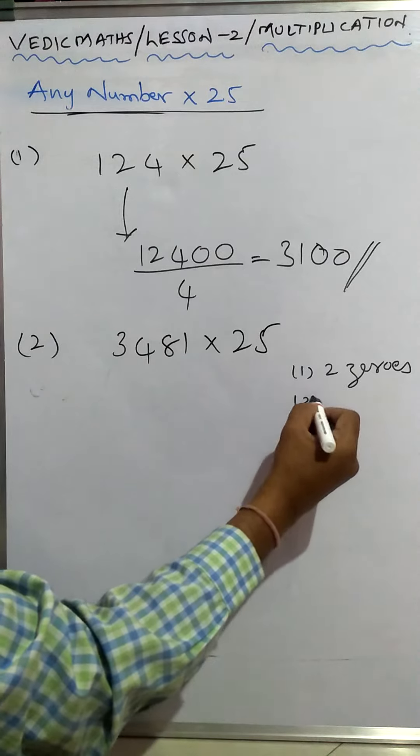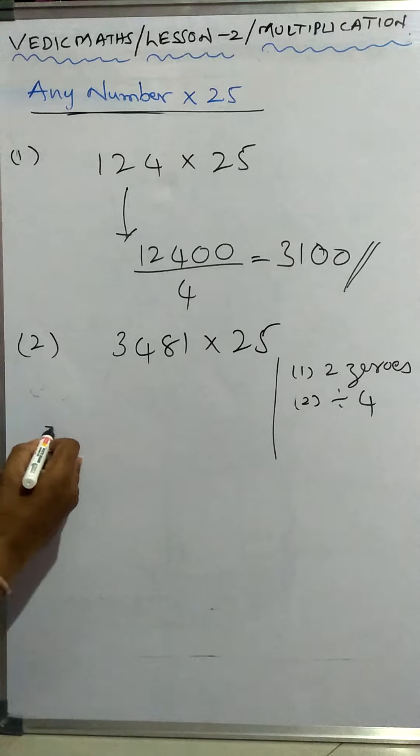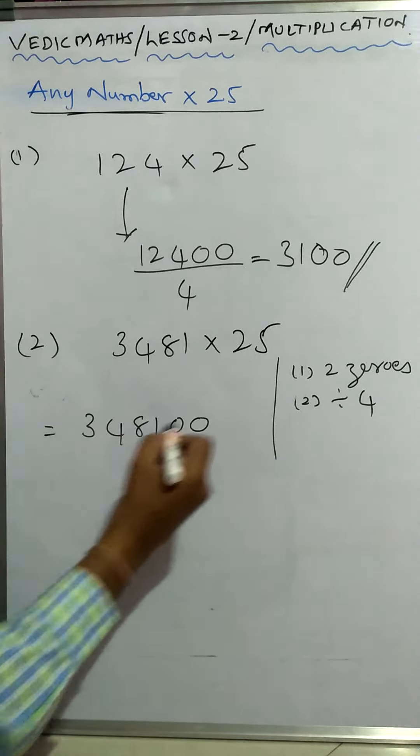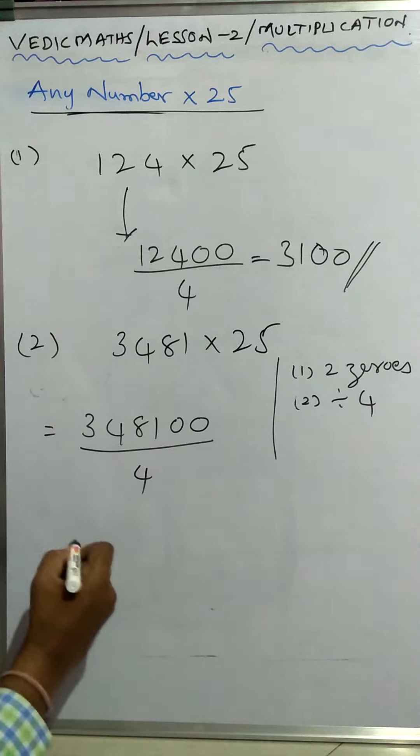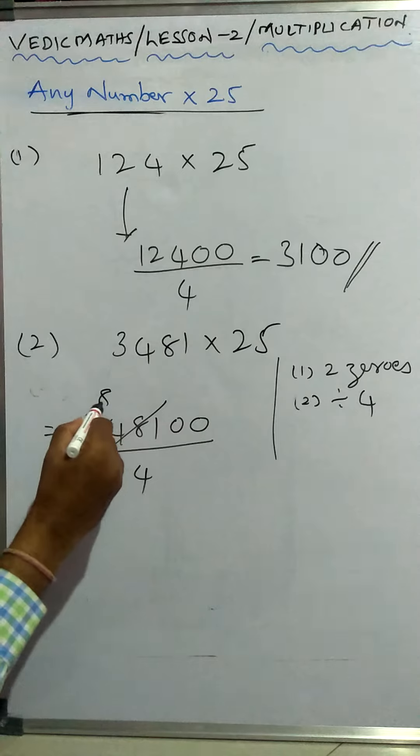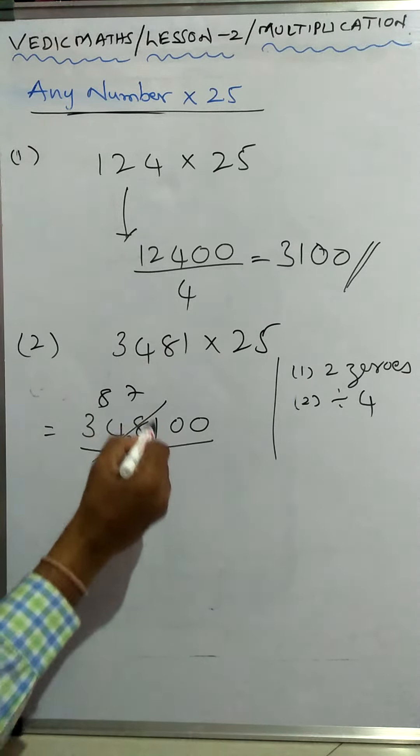And second is divide by four. That means three four eight one double zero and divide by four. What it will be? You see, four eight is thirty-two, two remainder, four seven is twenty-eight, then put two zero.